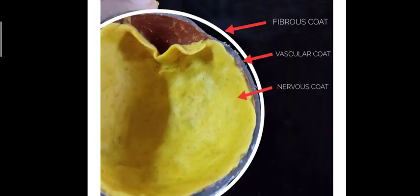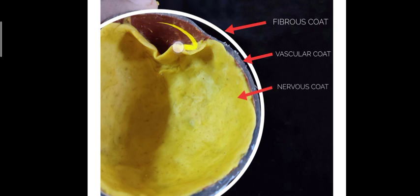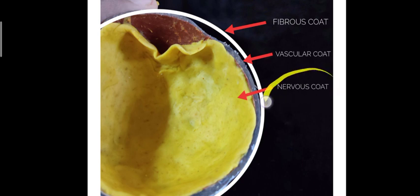Here we have a representation of the layers. The outer fibrous coat is represented by the white line, the middle vascular coat by the brownish-black layer, and the inner coat — the nervous coat or retina — is adherent to the vascular coat. I have detached a part of it to show the separation between them.